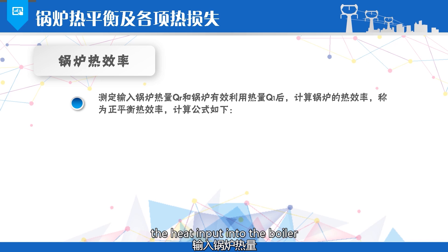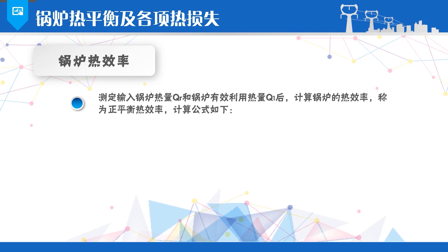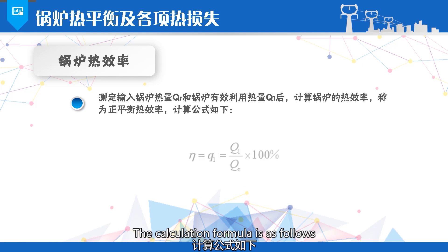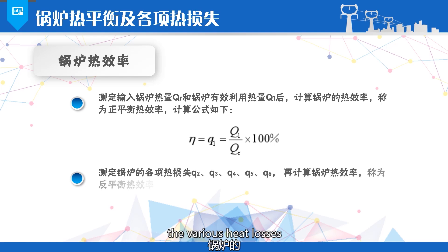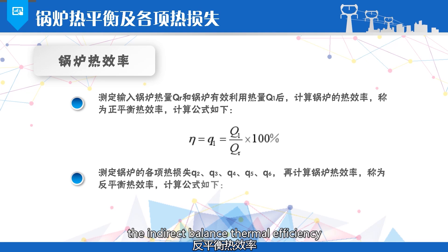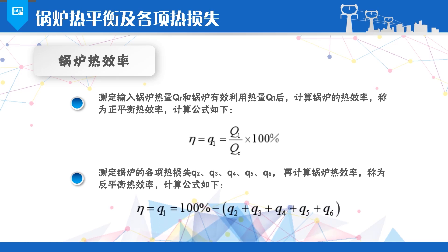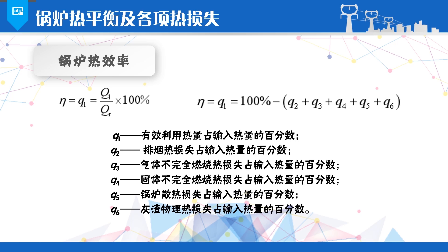Boiler thermal efficiency can be determined through two methods. The first method is to measure the heat input into the boiler and the effective heat utilization, and then calculate the boiler's thermal efficiency — this is referred to as the direct balance thermal efficiency. The calculation formula is: η = Q1 / (Q1 + Q2 + Q3 + Q4 + Q5 + Q6) × 100%. The other method is to measure the various heat losses of the boiler and then calculate the boiler's thermal efficiency — this is referred to as the indirect balance thermal efficiency. The calculation formula is: η = 100% − (Q2 + Q3 + Q4 + Q5 + Q6).